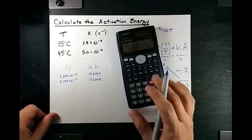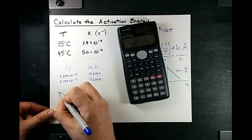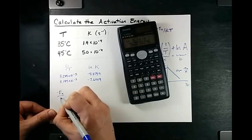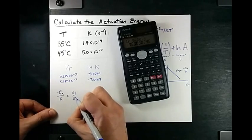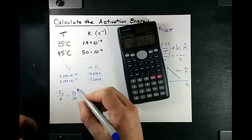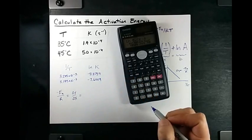That seemed like a lot of work, but the slope negative EA over R is simply delta y over delta x for me, or y2 minus y1 over x2 minus x1.